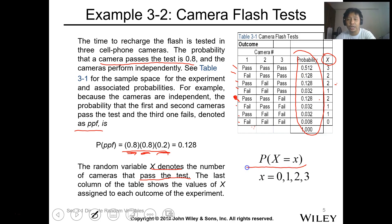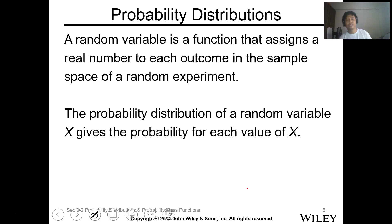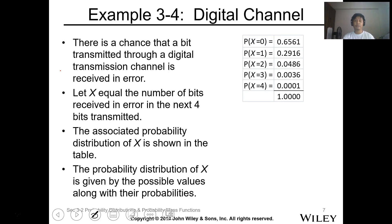That means the probability of each outcome, for any value of X where the possible values are 0, 1, 2, and 3 for this random experiment. A random variable is a function that assigns a real number to each outcome in the sample space of a random experiment. The probability distribution of a random variable X gives the probability of each value.